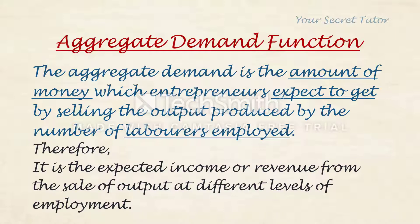Aggregate demand is the expected income or revenue from the sale of output at different levels of employment. For example, if 100 units of laborers are employed and products are produced, the entrepreneur's revenue is the aggregate demand. Now, if employment increases to 200, the revenue from products produced is also the aggregate demand — that is, at different levels of employment.